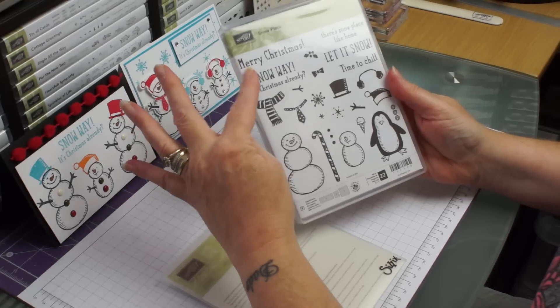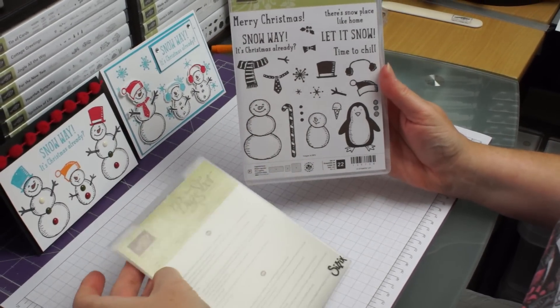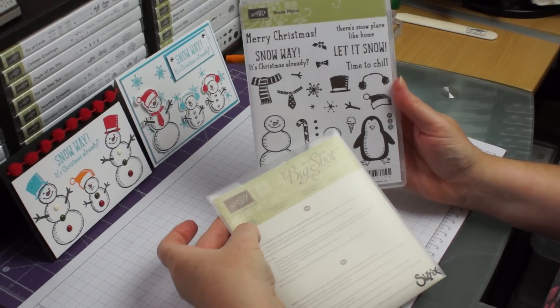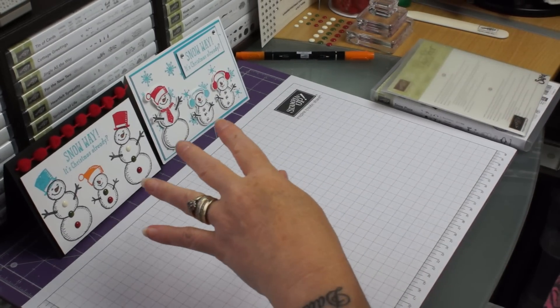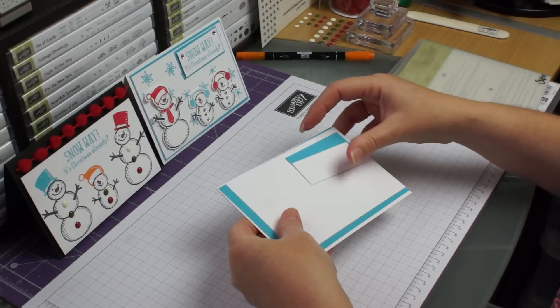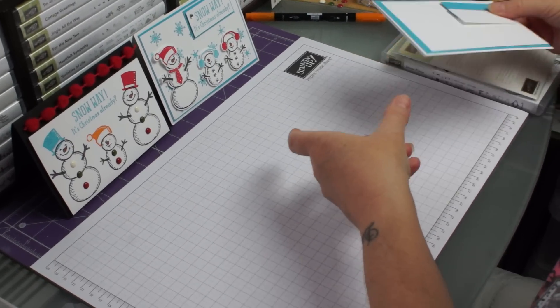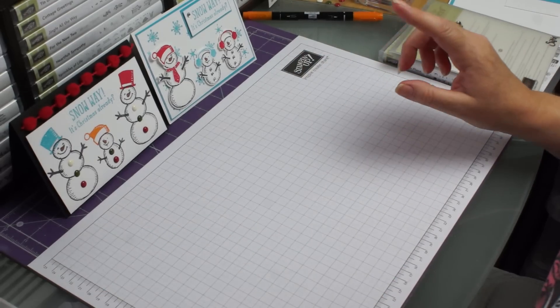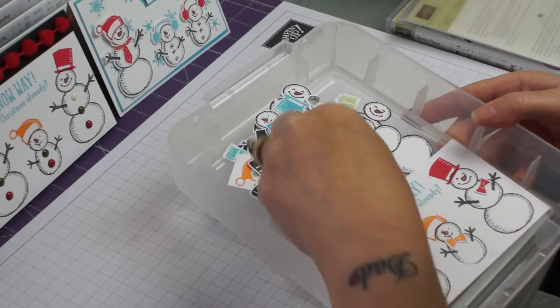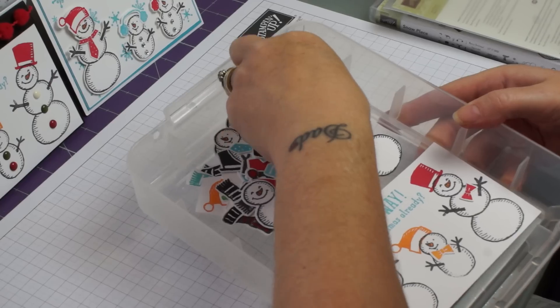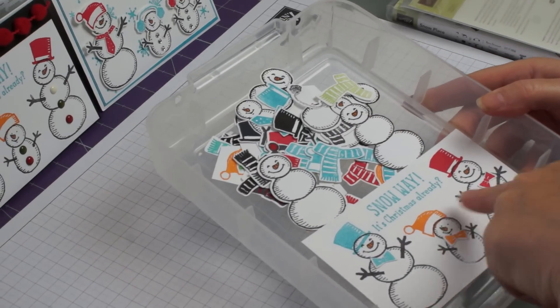I'm going to use my favourite set at the minute, Snow Place, with the coordinating framelits which are called Snow Friends. Now I've already prepared all my cards but I will put all the dimensions for these on my blog. I've also had Gary busy with my Big Shot making cutting my little bits out and I've already started another card here.